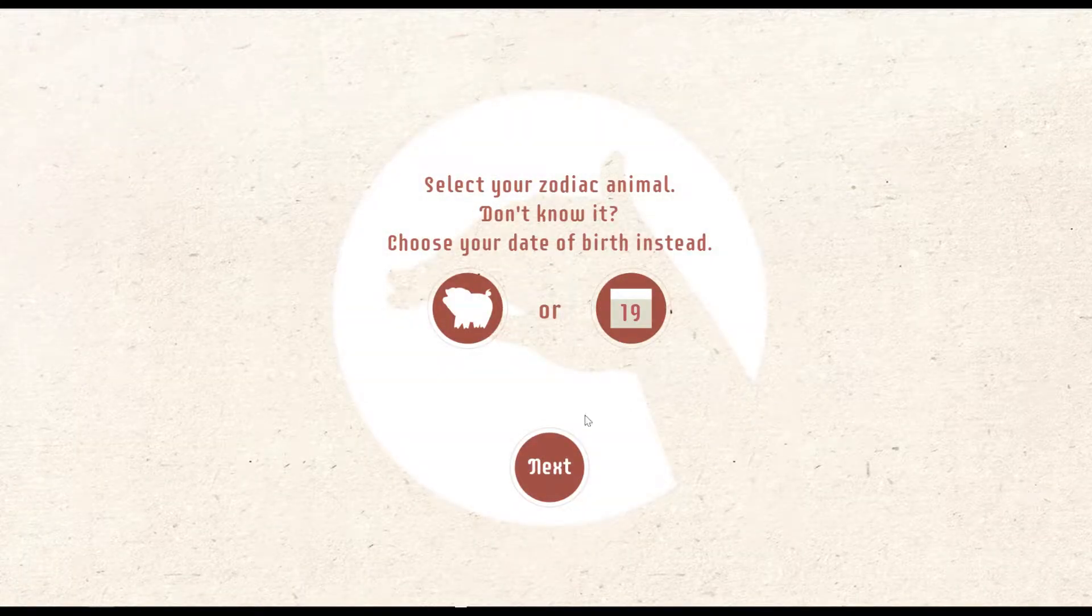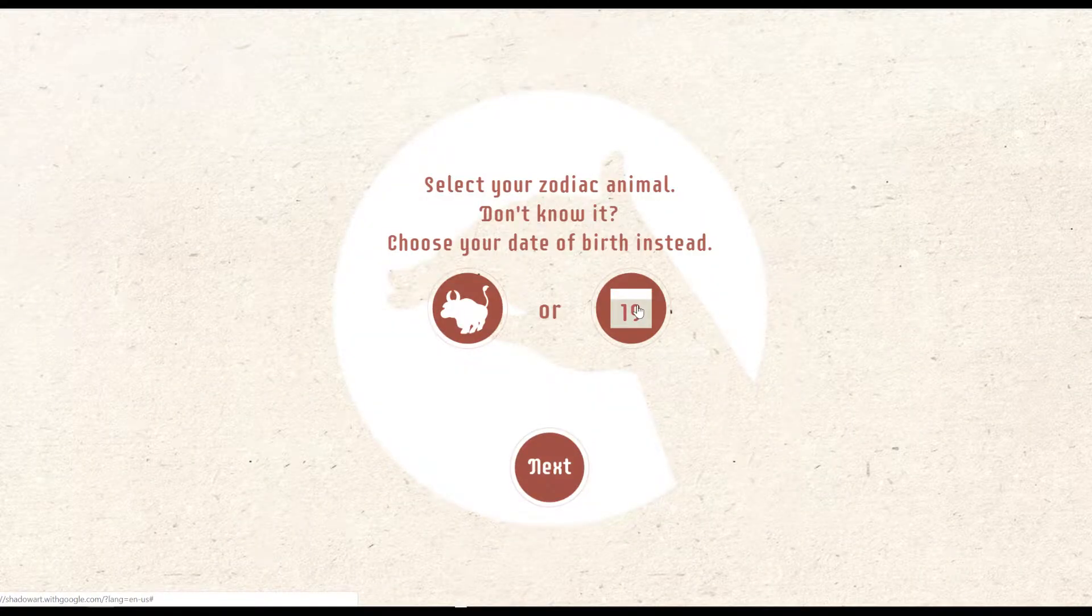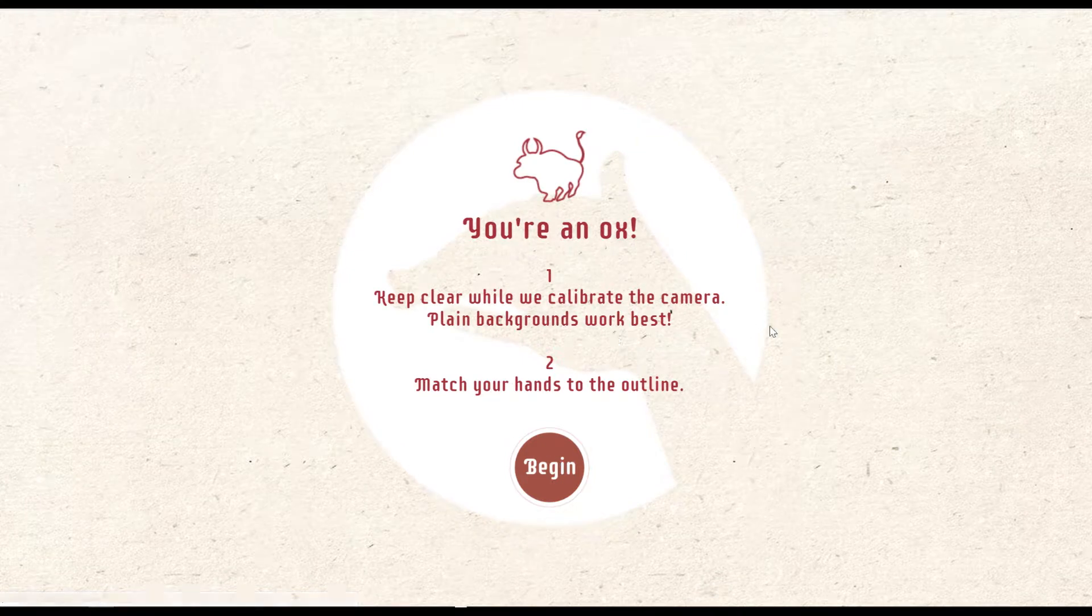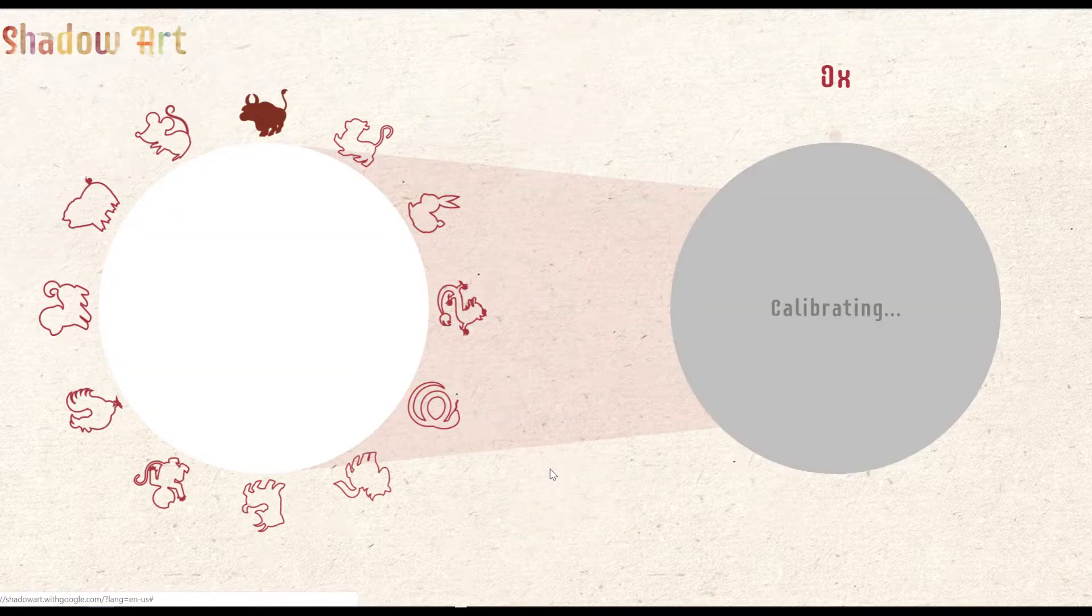So let me demonstrate. It's loading now. Apparently you have to select your zodiac animal. For me it's an ox, so I choose an ox. Press next and let's wait. Yes, so selected, I'm an ox. Let's begin.